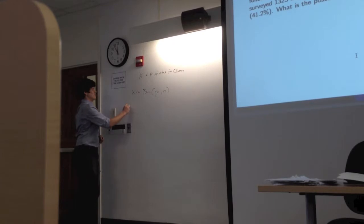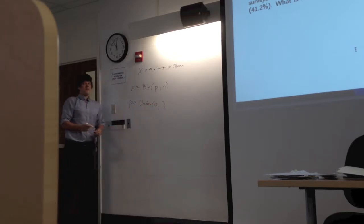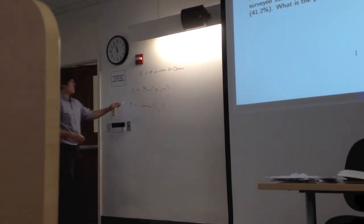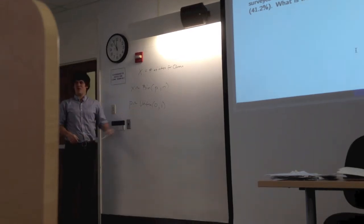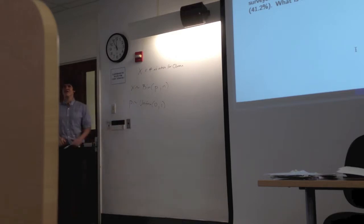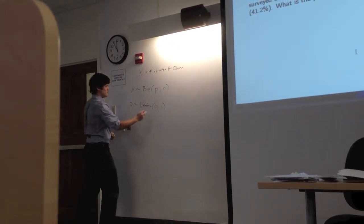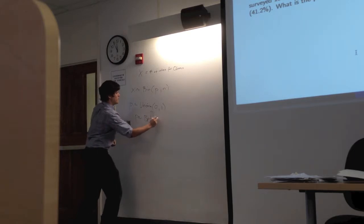Our prior is uniform — specifically the standard uniform from 0 to 1. From the last table, the first conjugate pair was binomial-beta. We can rewrite this uniform as Beta(1,1), which is equivalent to the standard uniform. This is preferable because then we automatically know what the posterior is.